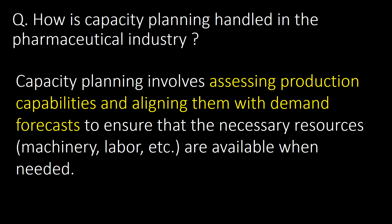How is capacity planning handled in the pharmaceutical industry? Capacity planning involves assessing production capabilities and aligning them with demand forecasts to ensure that the necessary resources — such as machinery and labor — are available when needed.